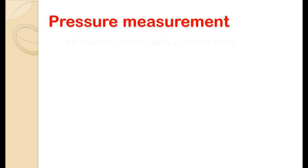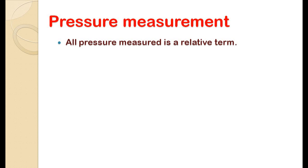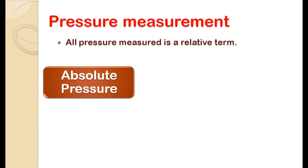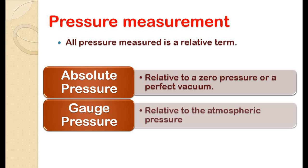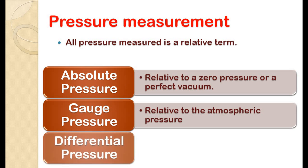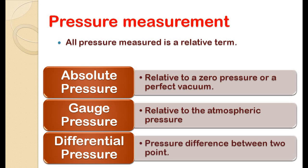Measuring pressure of a gas pipeline or water pipeline are examples of dynamic pressure measurement. The next term to understand is that all measured pressure is a relative term. Depending on the reference, pressure is divided into three types: absolute pressure, gauge pressure, and differential pressure. Absolute pressure is measured relative to zero or a perfect vacuum; gauge pressure is measured relative to atmospheric pressure; and differential pressure is the difference between two points.